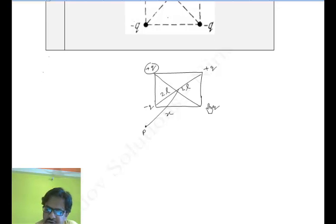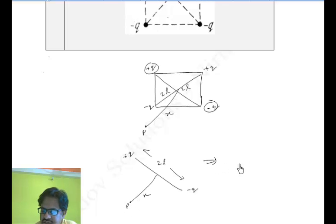If I consider this pair of charges, +q and -q, with this distance to be 2l and the point at distance x, simplifying this I get +q and -q in this manner.